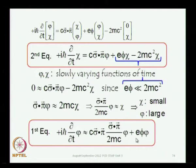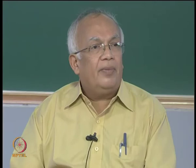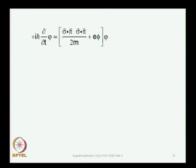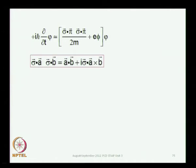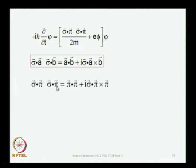Now we can express this relationship in the first equation, which is for phi — the large component. In the large-component equation, iℏ ∂φ/∂t = c(σ·π)χ, and this chi can now be replaced by (σ·π φ)/(2mc). So you have a relationship which does not have chi at all — we have approximately decoupled the equations. You are well aware of the identity involving the Pauli operators sigma: σ·a times σ·b equals a·b plus iσ·(a×b).